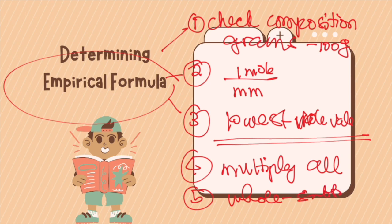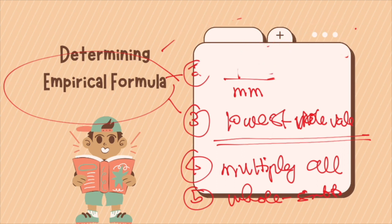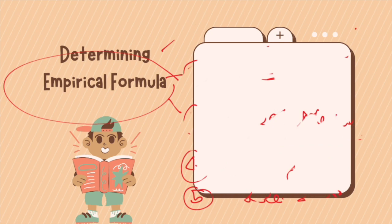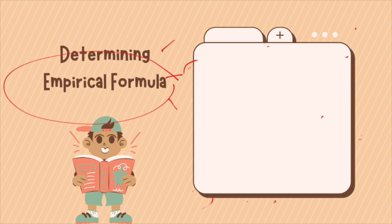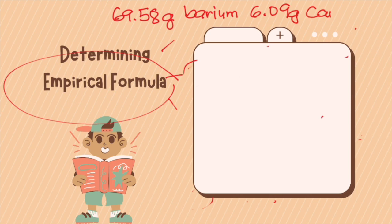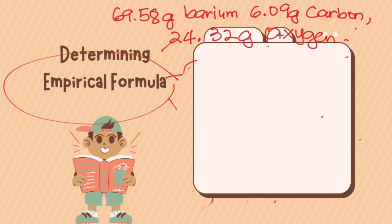Let's try an example. Suppose an experiment shows that a sample of a certain compound contains 69.58 grams of barium, 6.09 grams of carbon, and 24.32 grams of oxygen. What is the empirical formula of this compound? First, we check the units — all three elements are already in grams: 69.58, 6.09, and 24.32. This is the unit needed to determine the empirical formula.